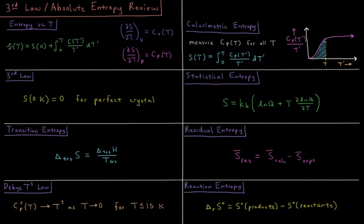So the entropy at a given temperature is going to be the entropy at zero Kelvin plus the integral from zero to T of the heat capacity at that temperature divided by the temperature. So the question is, what is the entropy at zero Kelvin for a system?